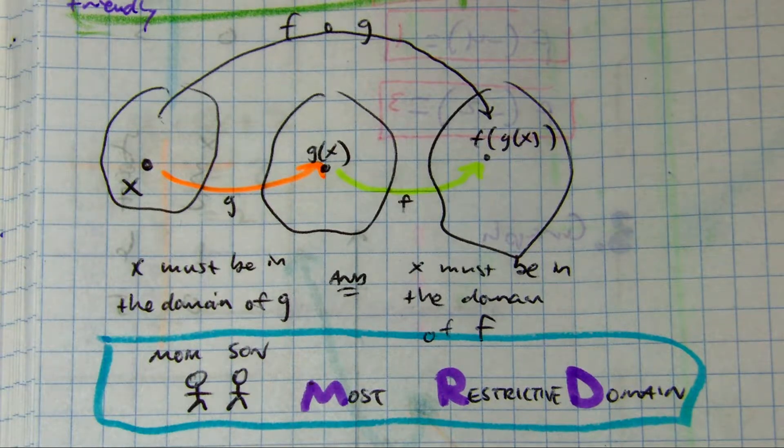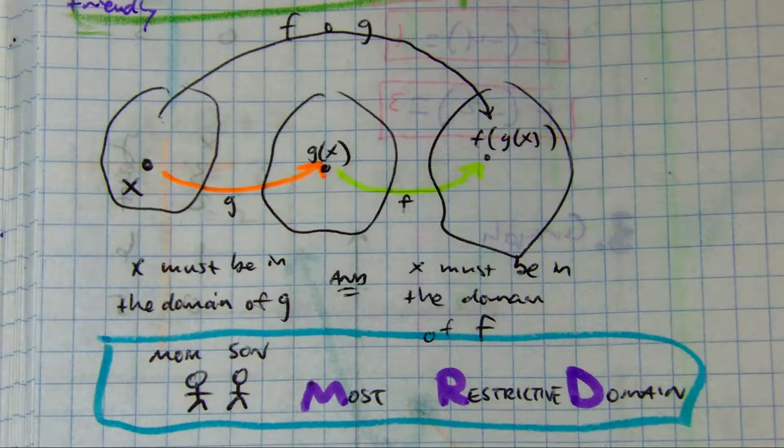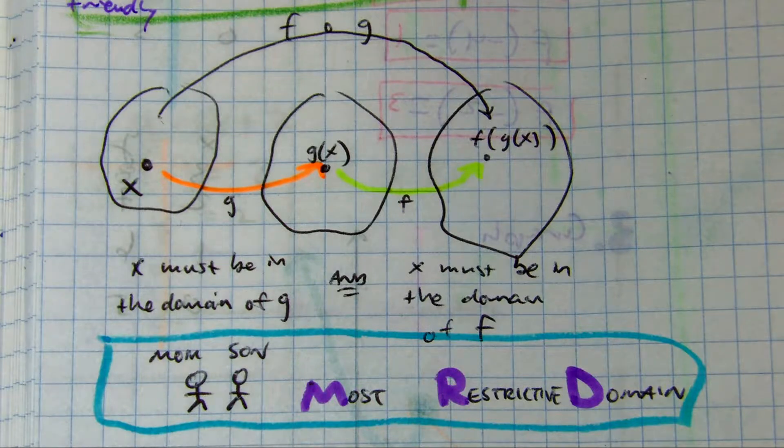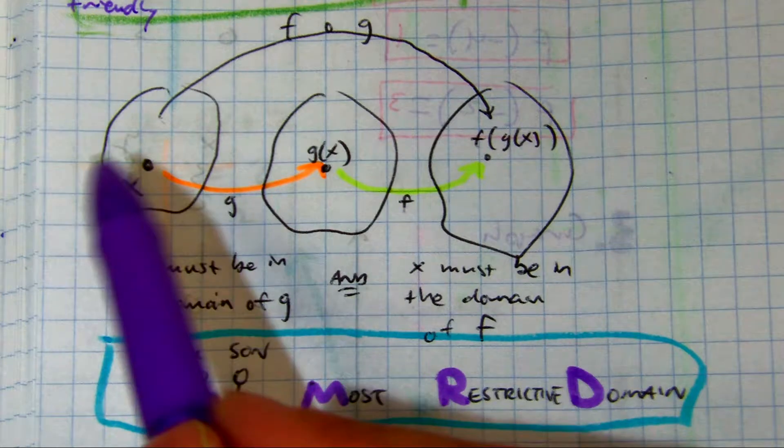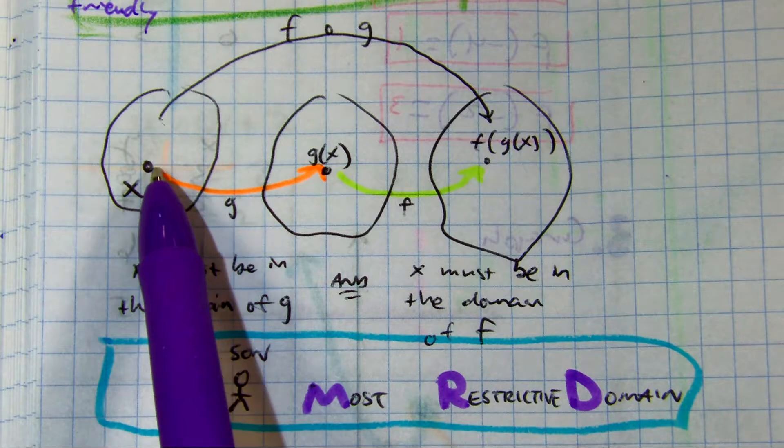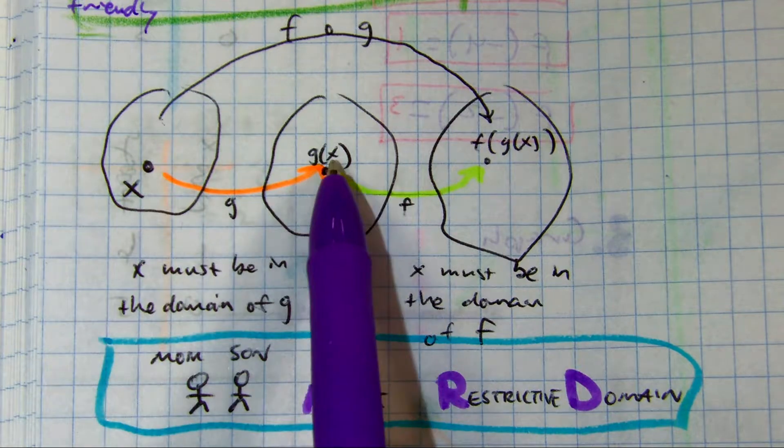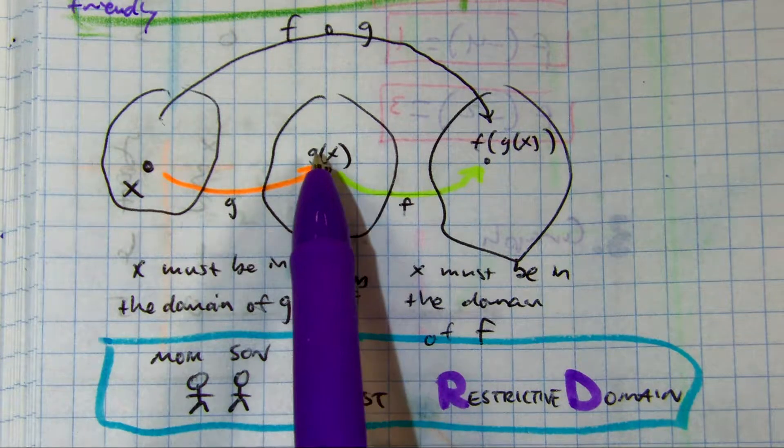All right, so here I'm going to talk about the domain of composite functions. We just talked about a real-life example like, can I put my old Nintendo game into your system and then can it actually play on the screen?